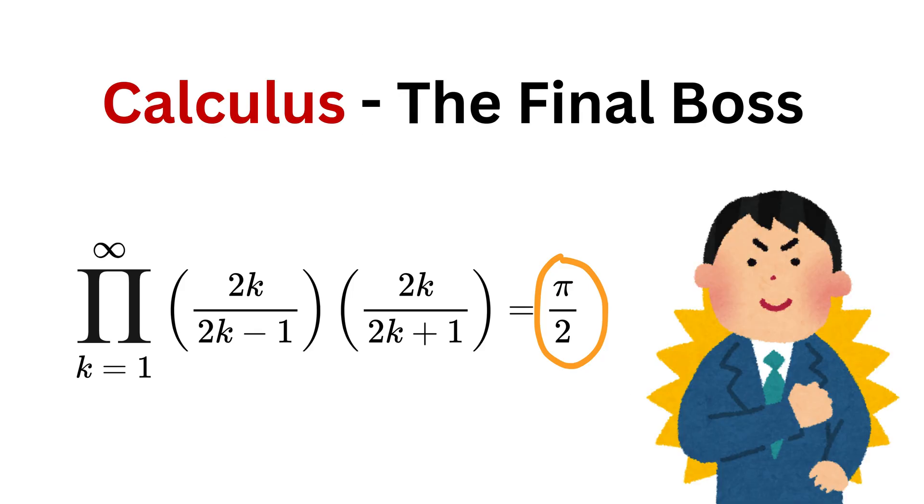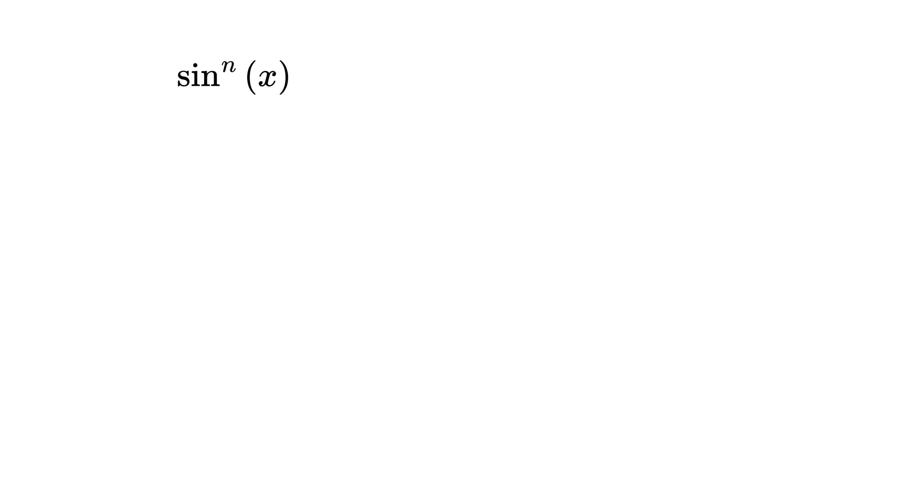Take the function sine of x raised to the power n. Now take the definite integral of this function from 0 to pi, which will show its exact area under this function. Let's call this area as I_n.